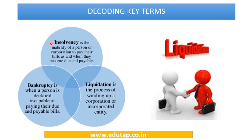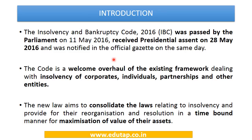Insolvency is the inability to pay bills as and when they become due; bankruptcy is when a court declares a person incapable of paying their bills. Liquidation is a step further — it is the process of winding up a corporation. If the corporation is unable to pay its debt, you either restructure that debt or wind up the company, realize proceeds from the sale of its assets, and distribute them to the creditors to whom the money is owed.